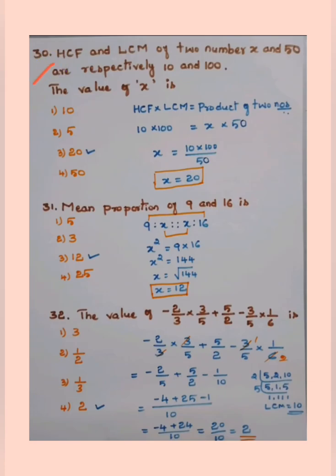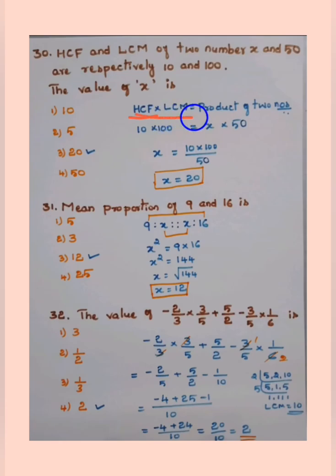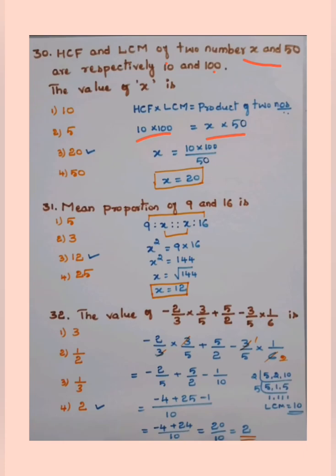Next: HCF and LCM of two numbers x and 50 are 10 and 100 respectively. Find the value of x. Using the formula: product of HCF and LCM = product of the two numbers. So 10 × 100 = x × 50. Therefore x = (10 × 100) / 50 = 1000/50 = 20. Option 3, x = 20, is the correct answer.